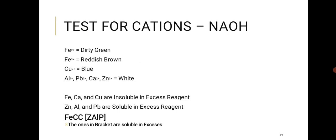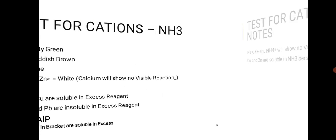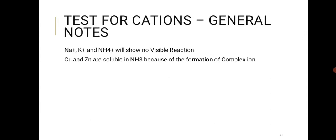For tests for cations (positive ions), we use two reagents: NaOH and NH3 solution. With NaOH: Fe²⁺ gives a dirty green precipitate; Fe³⁺ gives a different color; Cu²⁺ gives a blue precipitate; Pb²⁺, Al³⁺, Ca²⁺, and Zn²⁺ all give white precipitates. Those in brackets are soluble in excess NaOH; those not in brackets are insoluble. Add NaOH dropwise to see the color, then in excess to check solubility.